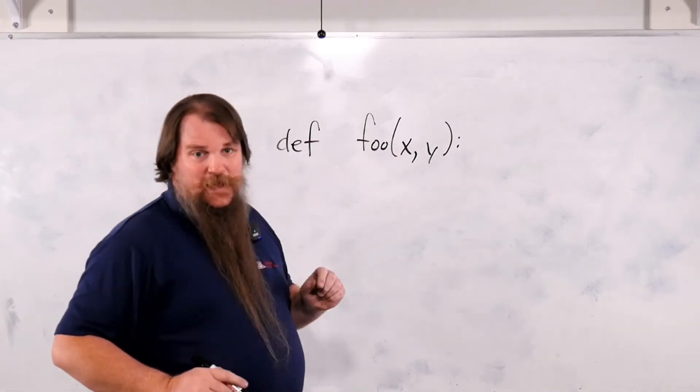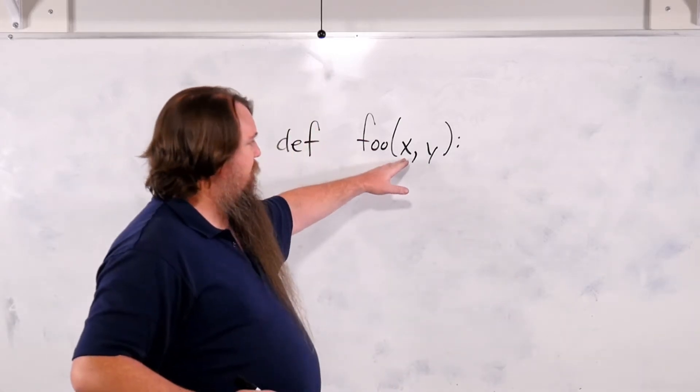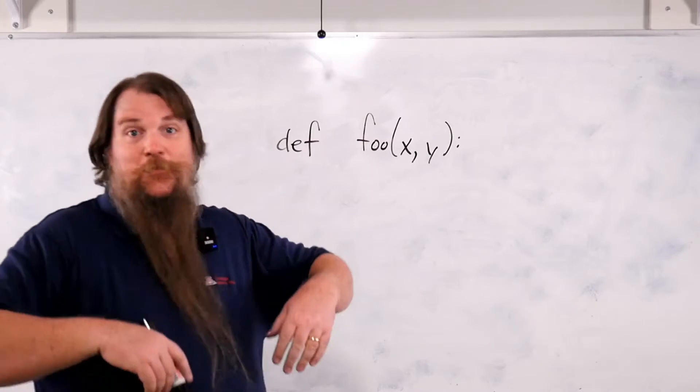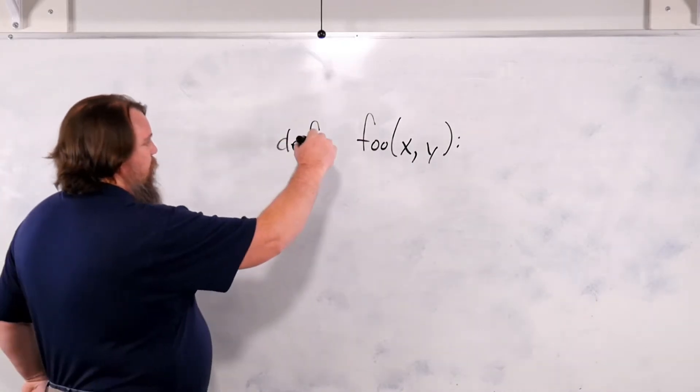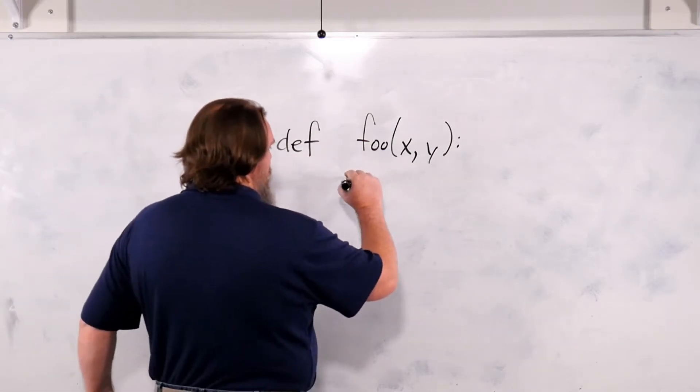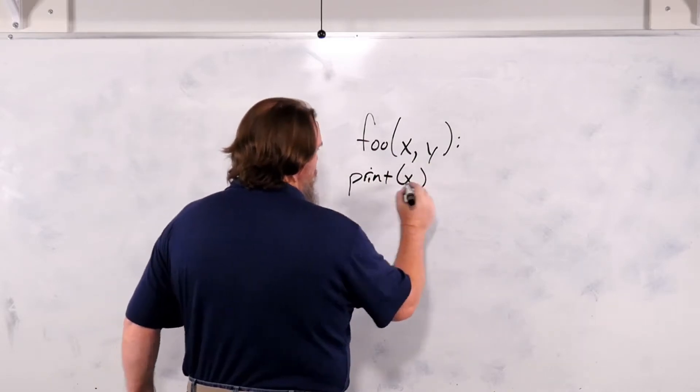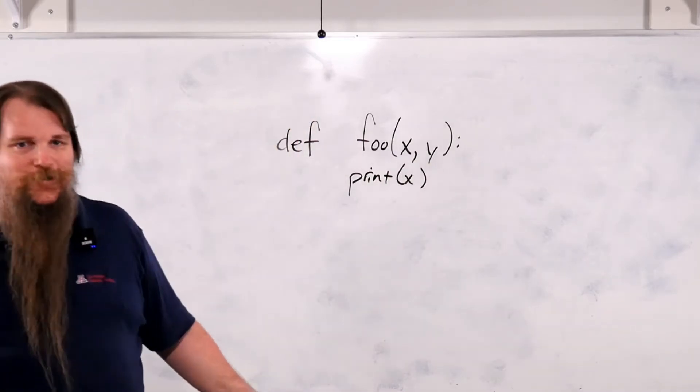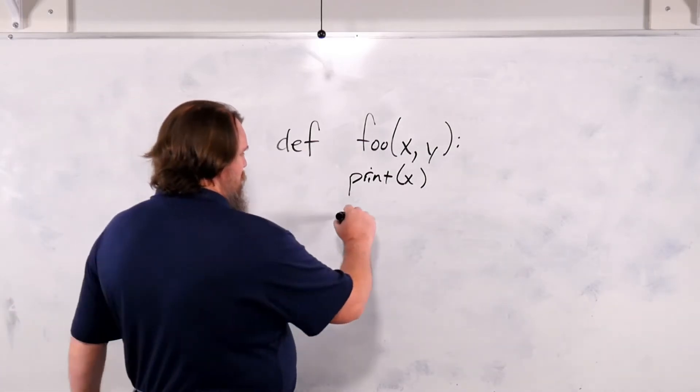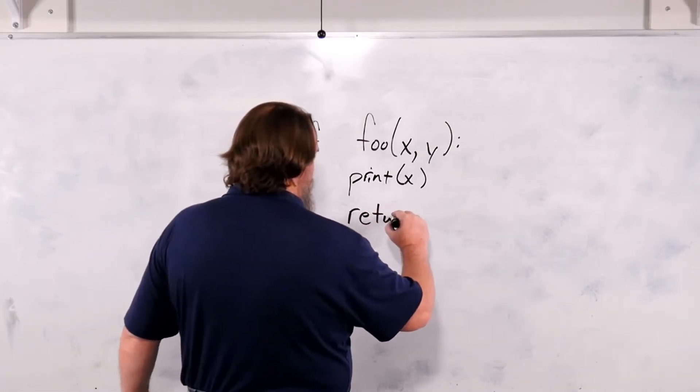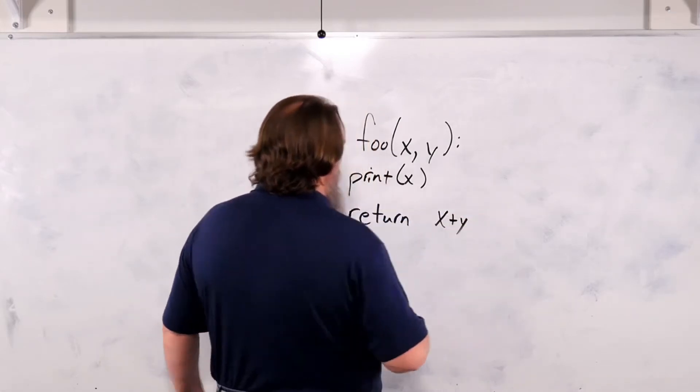We don't have any control over what those values are. They could be strings, they could be integers, they could be dictionaries, they could be file objects, whatever. Inside the body, we can do anything that we've seen so far. We can call other functions, we can have loops, you name it. At some point, if you want, you can do a return statement. Let's return x plus y.